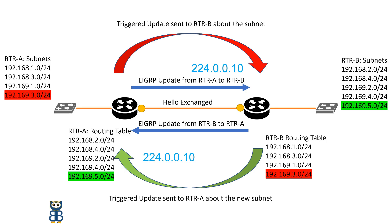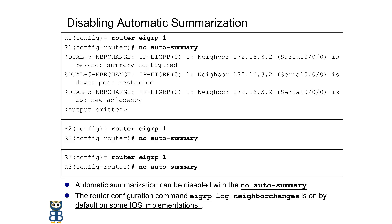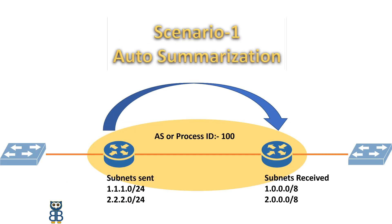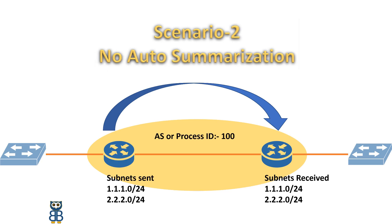In EIGRP, the summarization feature is enabled by default. To disable this, the no auto-summary command is needed, because by default EIGRP behaves like a classful routing protocol, which means it won't advertise the subnet mask along with the routing information. For example, 1.1.1.0/24 and 2.2.2.0/24 will be advertised as 1.0.0.0/8 and 2.0.0.0/8. Disabling the auto-summary feature ensures EIGRP sends the subnet mask along with the network.